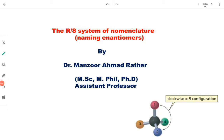Dear students, the topic of today's lecture is the R&S system of nomenclature. This is a method of naming enantiomers of a particular compound. R&S system of nomenclature holds a central topic in stereochemistry because by using R&S system you can name different enantiomers of a particular compound. So let's start this topic.